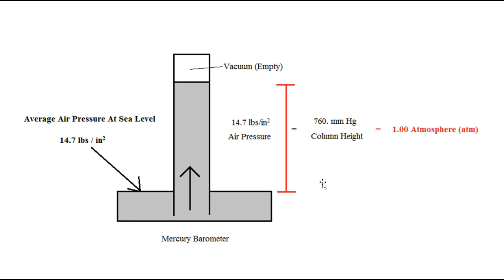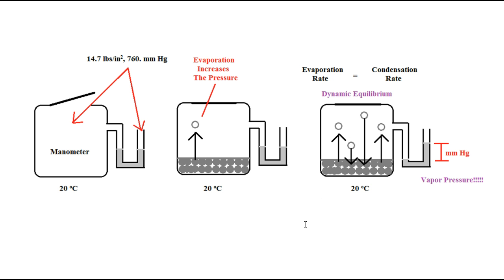Now, vapor pressure. A manometer is a device that we can put a liquid in. It starts off with mercury in a U-tube that's attached to the device, and the air pressure is pushing this way and this way the same, so they're nice and level. When we put in a liquid and close it, the liquid will start to evaporate. It will eventually evaporate so much that it will fill up all the space that the air up here can hold.